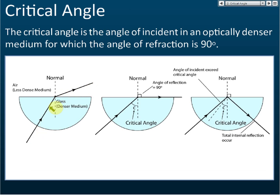If we increase the angle of incidence, the angle of refraction also increases. So this is the angle of incidence — if we increase it, we have a light ray like this. Then the angle of refraction also increases. You increase the angle of incidence and the angle of refraction will also increase.